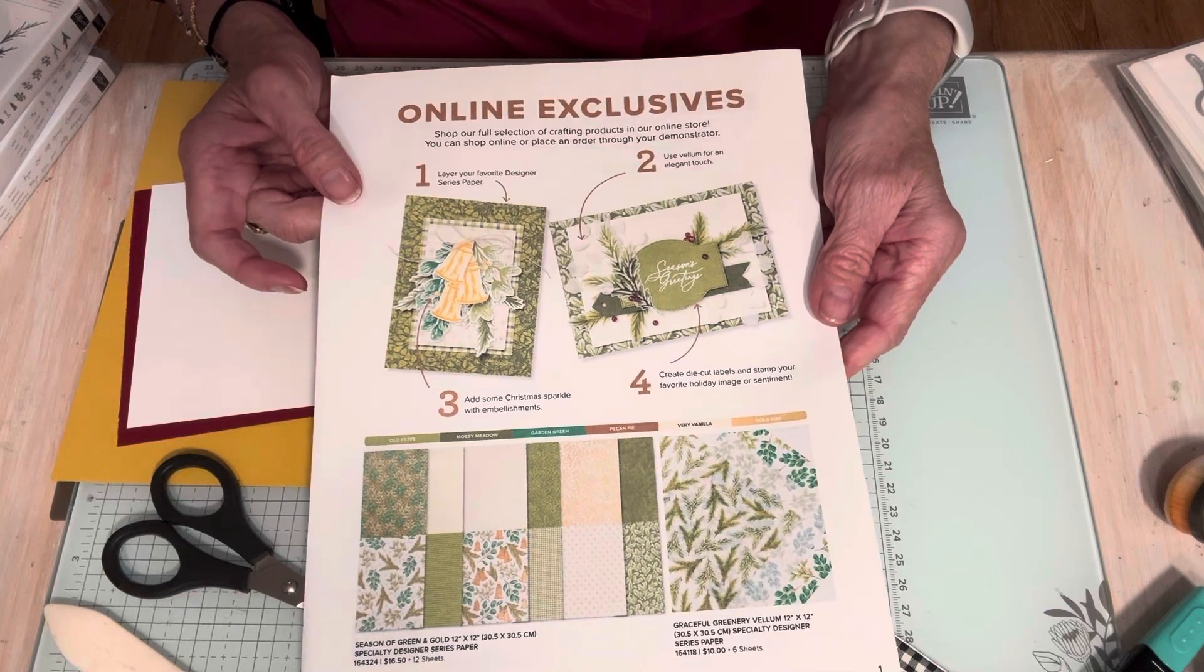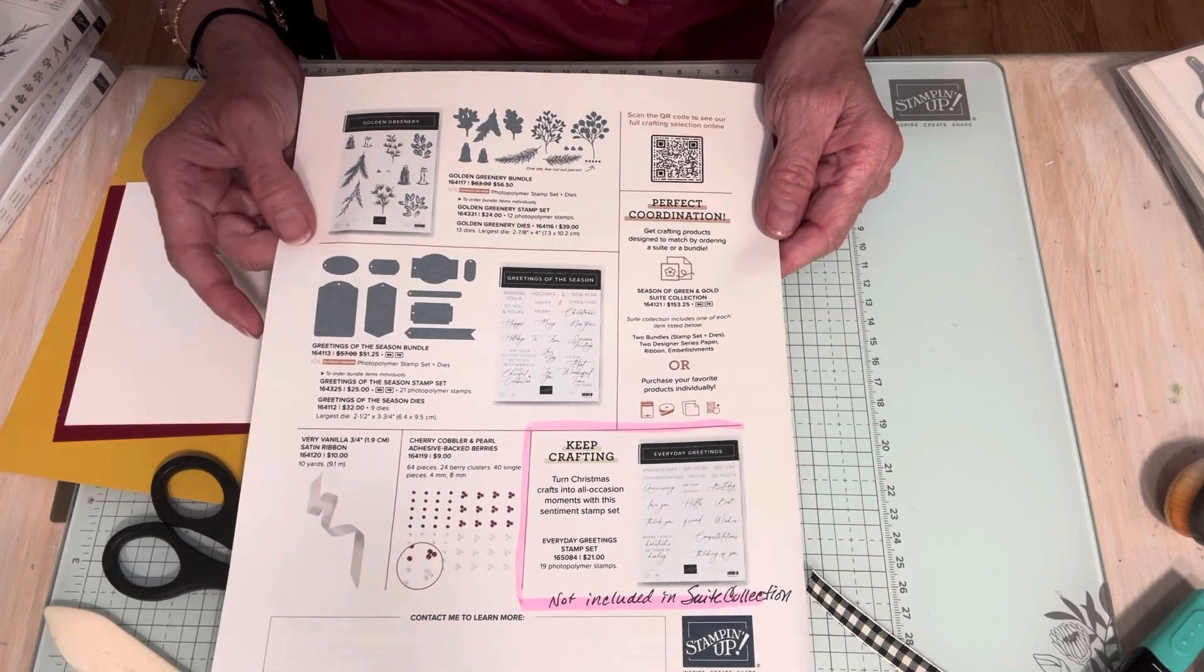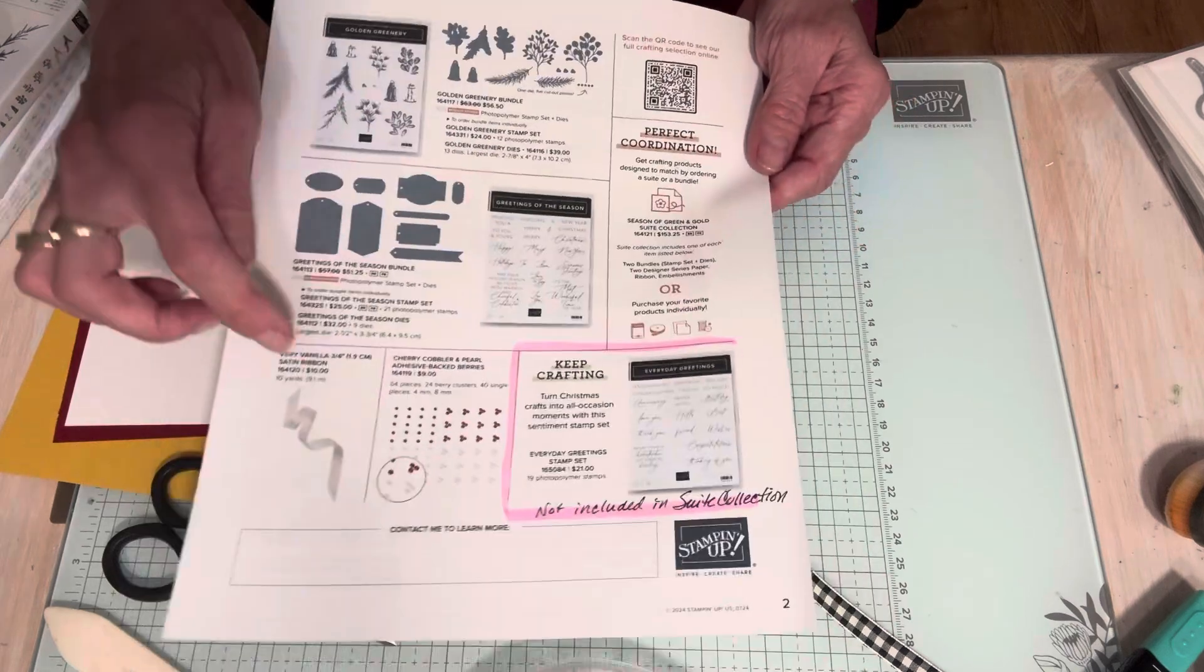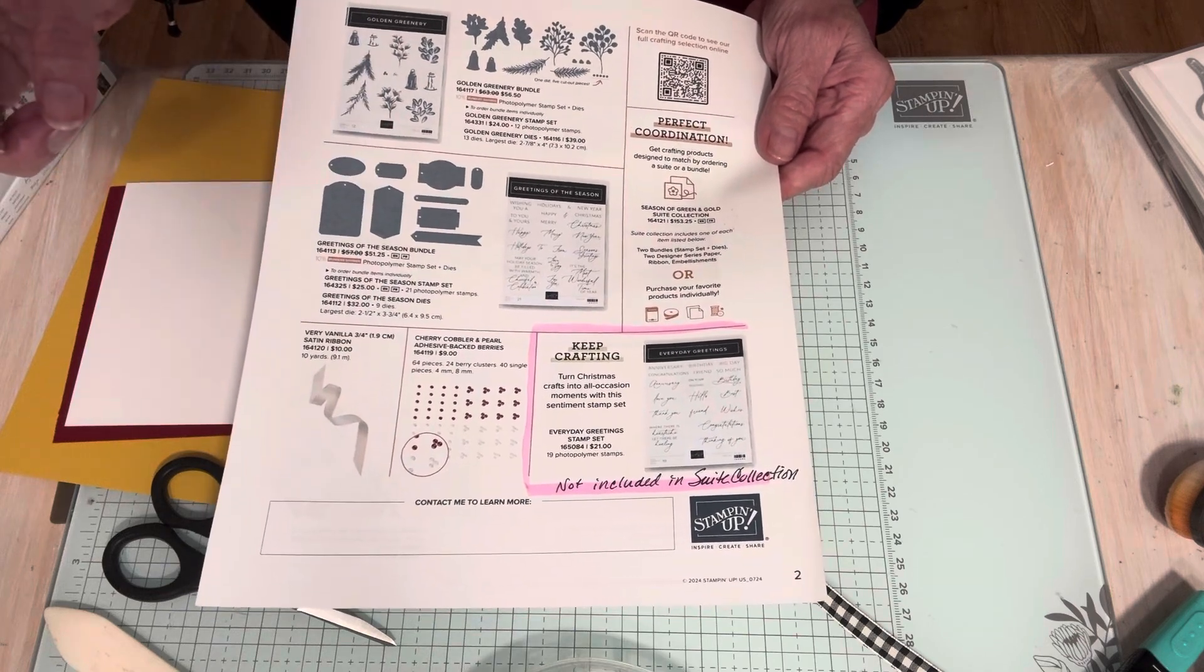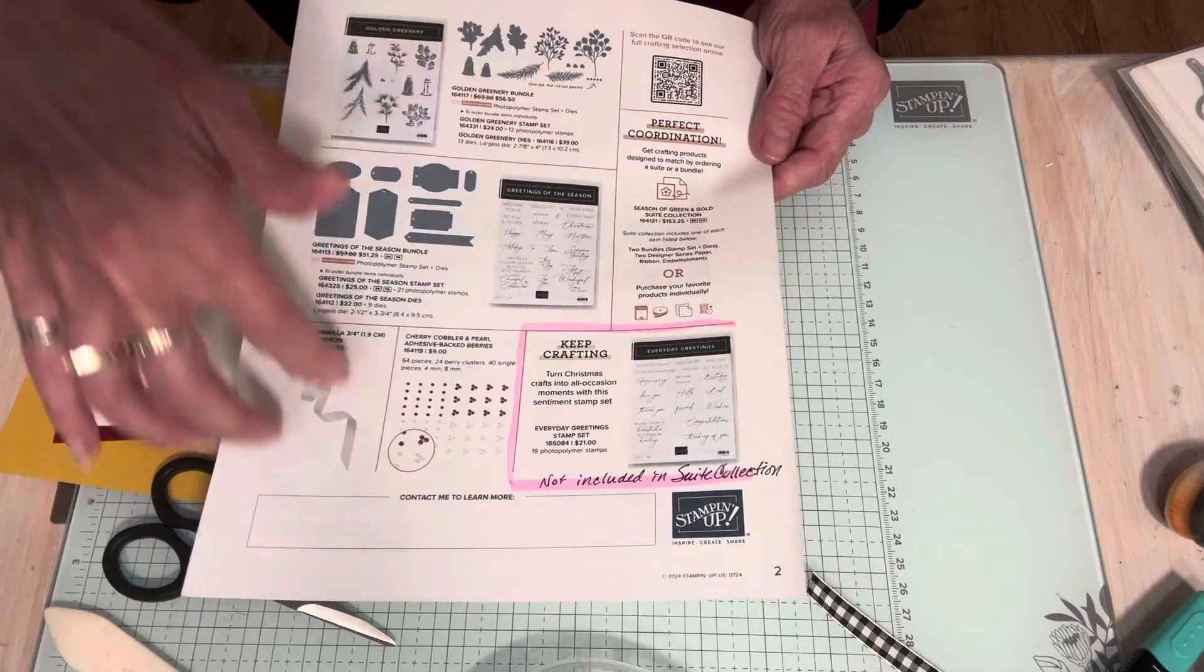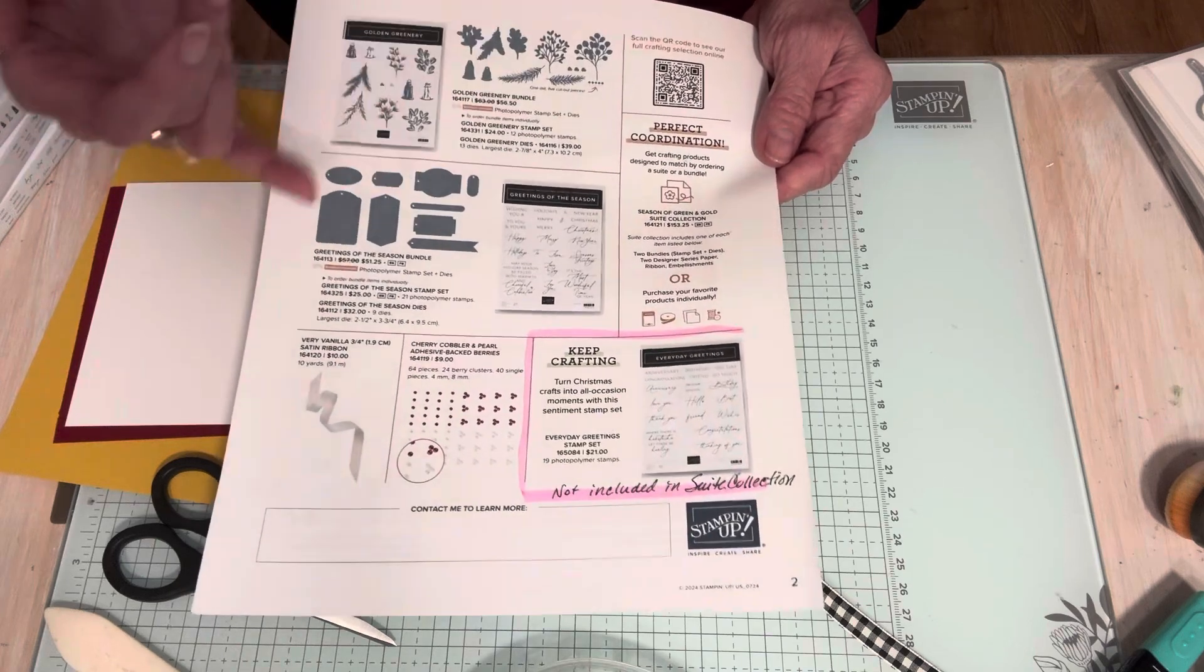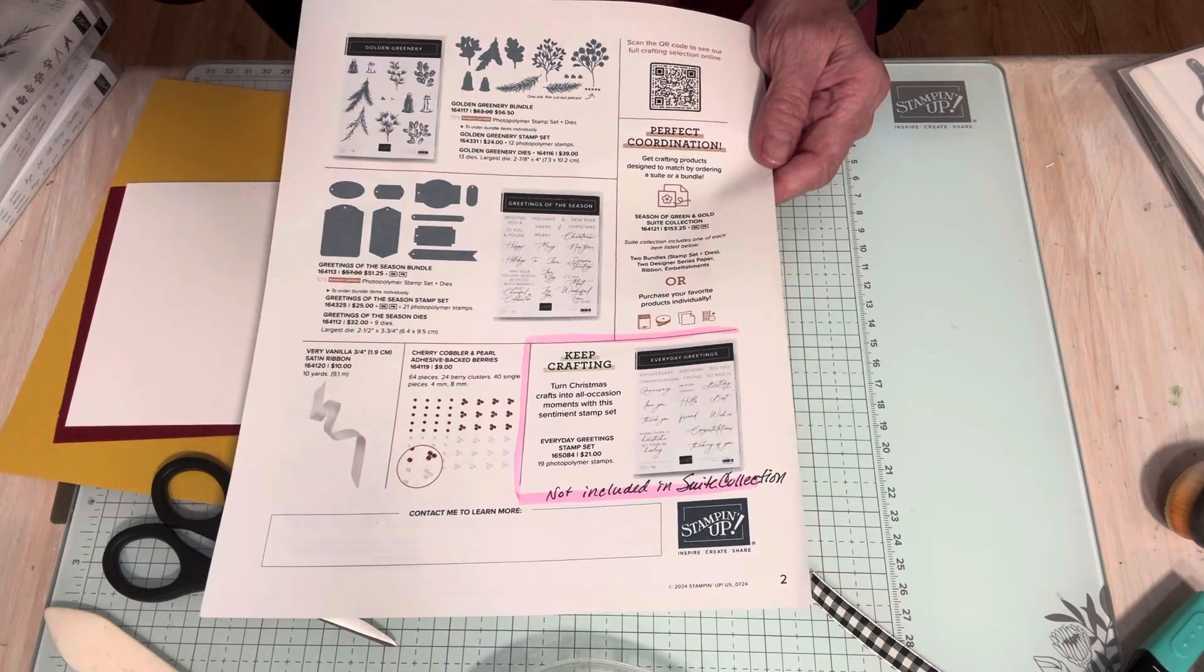This suite is amazing and it's called Season of Green and Gold Collection. It's called the collection because there's two bundles. If it's a collection, it has a stamp set and dies, a stamp set and dies, ribbon, and some kind of an accessory. This is the Cherry Cobbler and Pearl Adhesive Back Berries. You can purchase these in a bundle or as a suite, or you can purchase them separately. You save by purchasing them together because these are two bundles. So you're going to save 10% off each of these if you purchase them as a bundle. So the whole collection is $153.25.